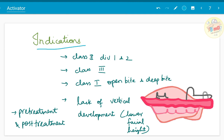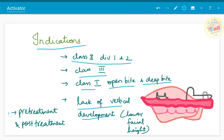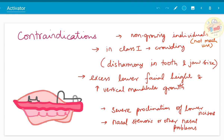Moving on to the indications of activator — when we will use this myofunctional appliance. Usually any myofunctional appliance is advocated during the growth phase in growing individuals, that is in children. In children we can correct skeletal changes such as Class 2 Division 1 and 2, Class 3, and in Class 1 — open bite and deep bite cases. Also, lack of vertical development where the lower facial height is not developed, and in pre-treatment cases before starting fixed orthodontics, and also as a post-treatment retentive appliance.